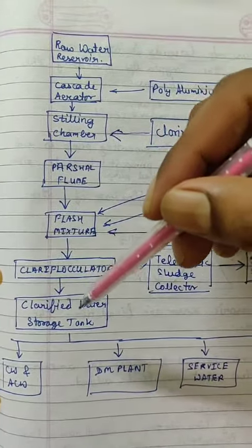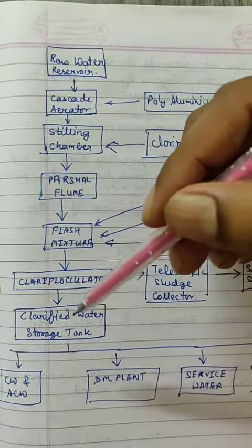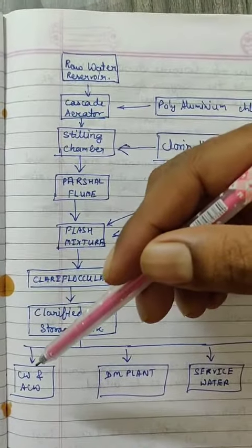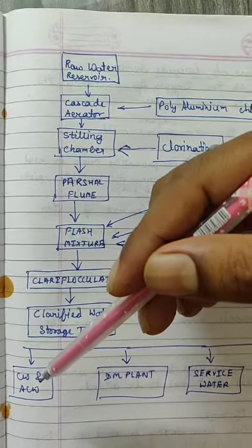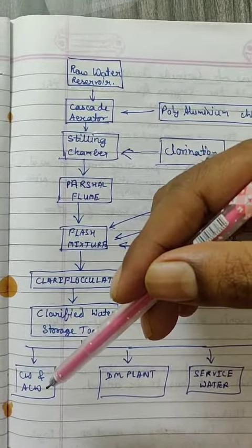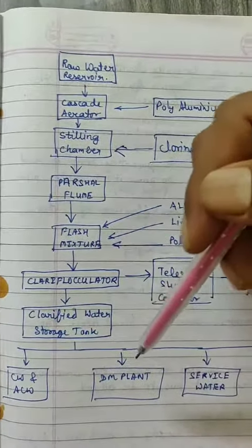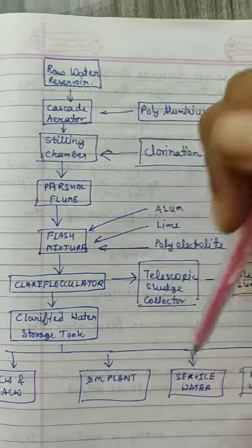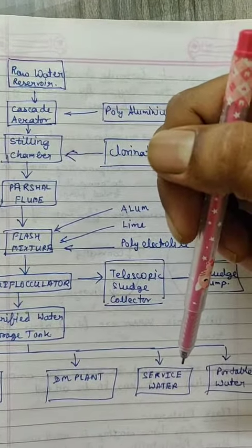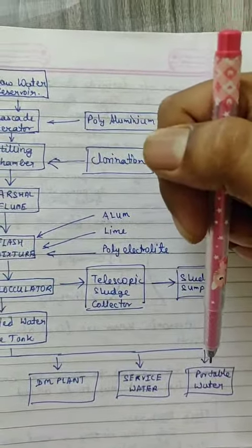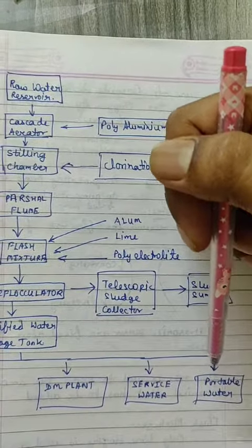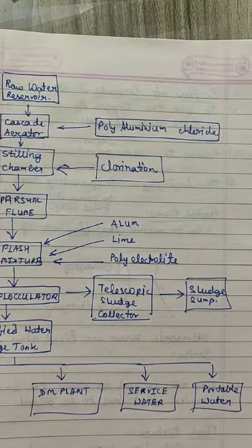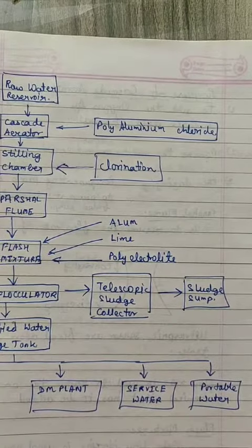Water from the storage tank is supplied from CW and ACW — cooling water and air cooling water — and from the DM plant, the de-mineralization plant. Service water is used together with potable water throughout the plant. This was the treatment of water in power plant engineering. Thank you.